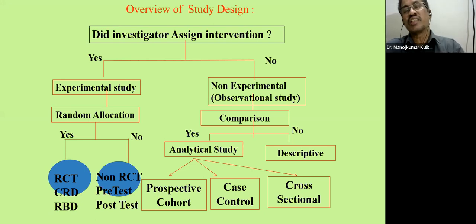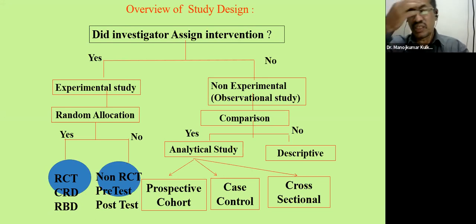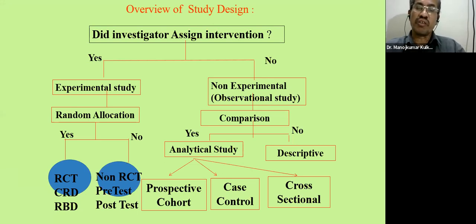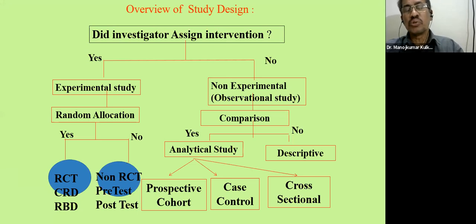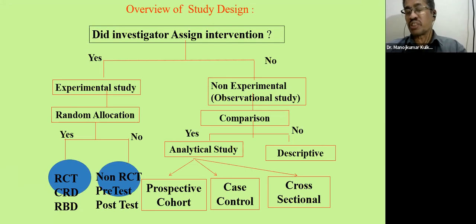In a case-control study, especially in health science, to identify risk factors, researchers take a group of persons with a disease and a group without the disease. For example, to find out whether smoking and alcohol are associated with the development of heart disease, the researcher selects heart disease patients and non-patients and gets information about whether they are smokers or consume alcohol. Prospective and cross-sectional studies are very popular. In descriptive studies, we usually conduct cross-sectional surveys.